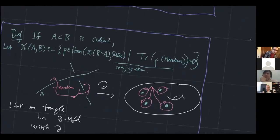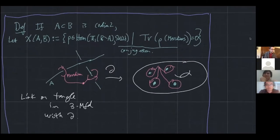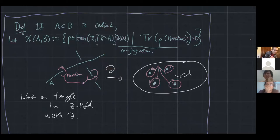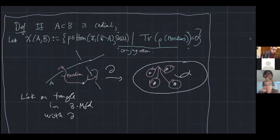So let me start with the main definition that you should remember. I'll be using this during the entire talk. If you have some kind of co-dimension two sub-manifold A inside of B, then I want to assign to that pair something I'll call chi of AB, which is the SU2 traceless character variety of that pair. We'll take them up to conjugation as usual.